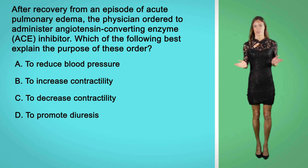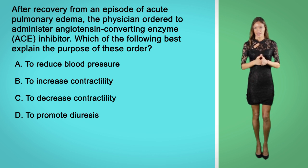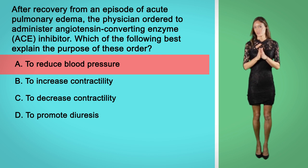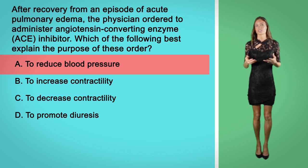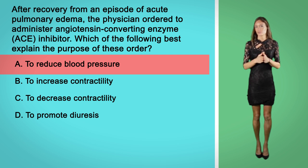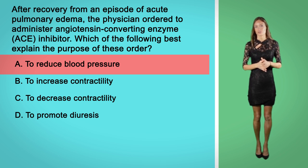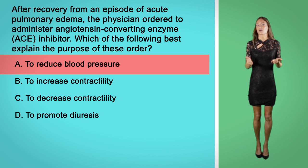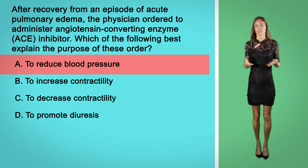The correct answer here is option A. ACE inhibitors are given to reduce blood pressure by inhibiting aldosterone production, which in turn decreases sodium and water reabsorption. ACE inhibitors also reduce production of angiotensin II, a potent vasoconstrictor, which can increase the risk of a blood clot.